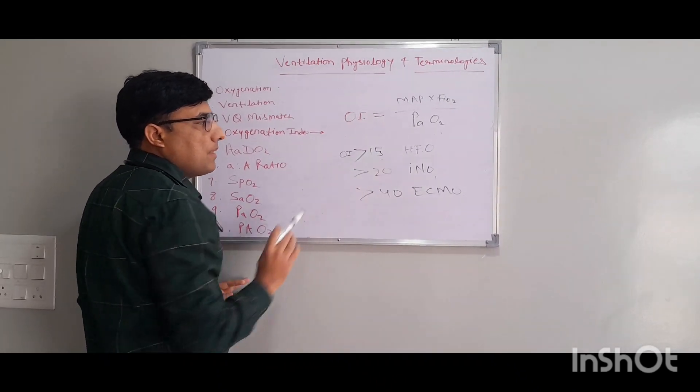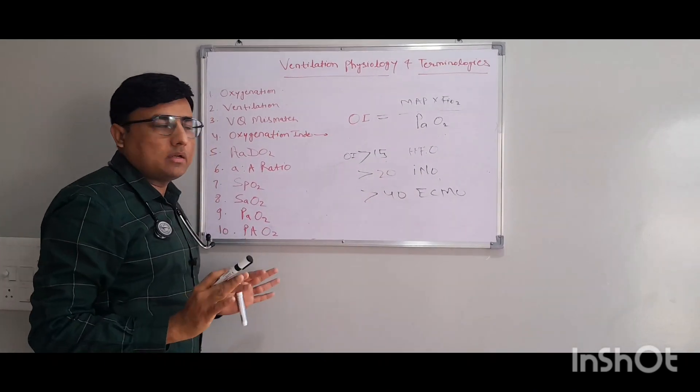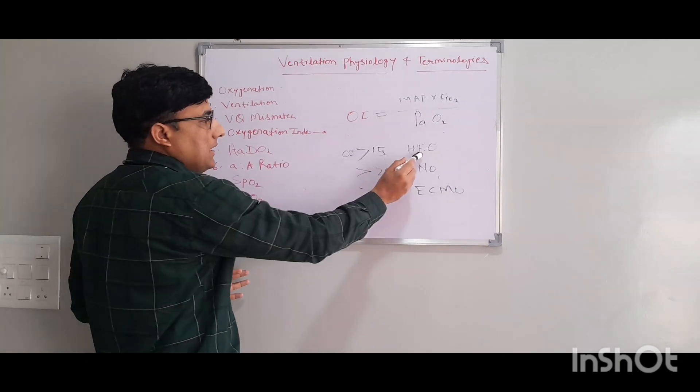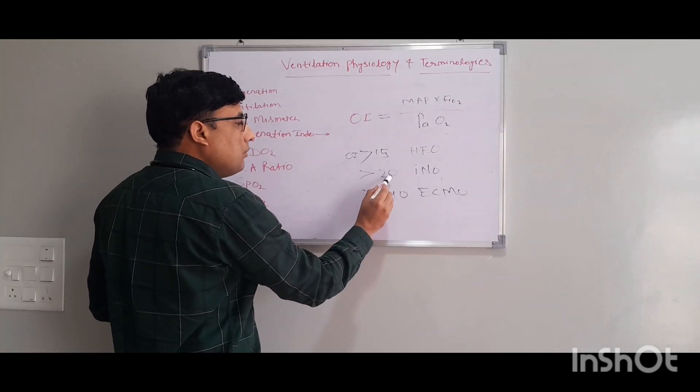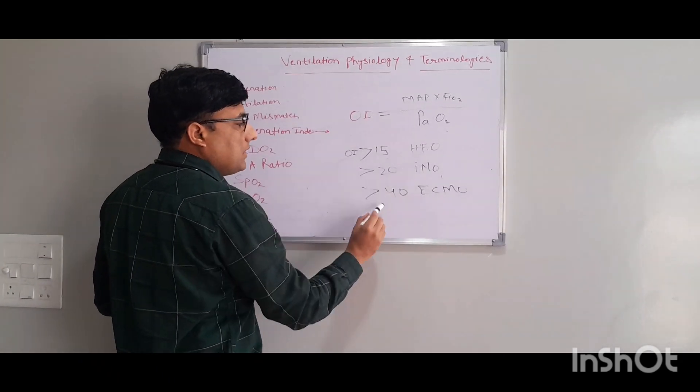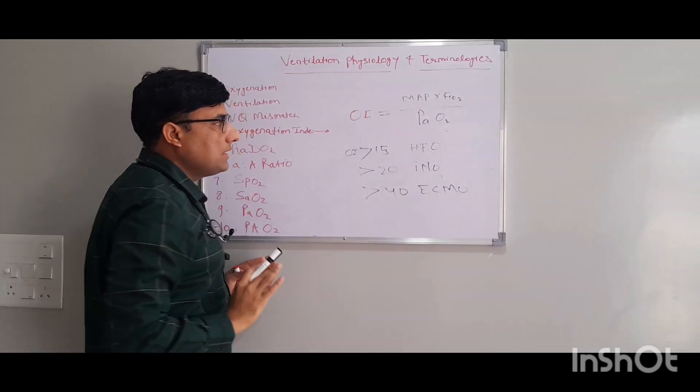To summarize the OI thresholds: OI more than 15 may indicate need for HFO, more than 20 is an indication for iNO, and more than 40 is an indication for ECMO. This is the management guide for hypoxemic respiratory failure.